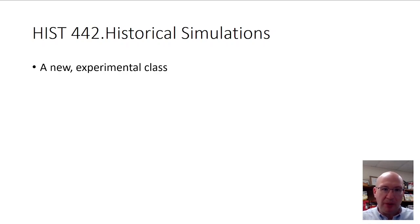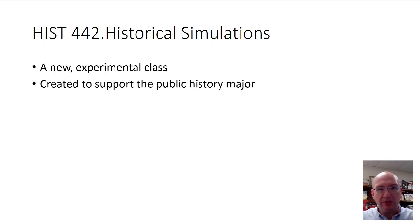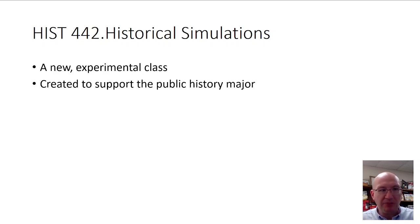First of all, this is a new experimental class. History 442 — you may have seen sometimes History 441 — those are courses in a slot that we use when we want to experiment with something, and then if we like it and students like it, we make it into a regular course. So if this course goes well, it might become a regular course. It was created to support the public history major. You don't have to be in public history — that's fine — but that's what caused me to want to create the course.